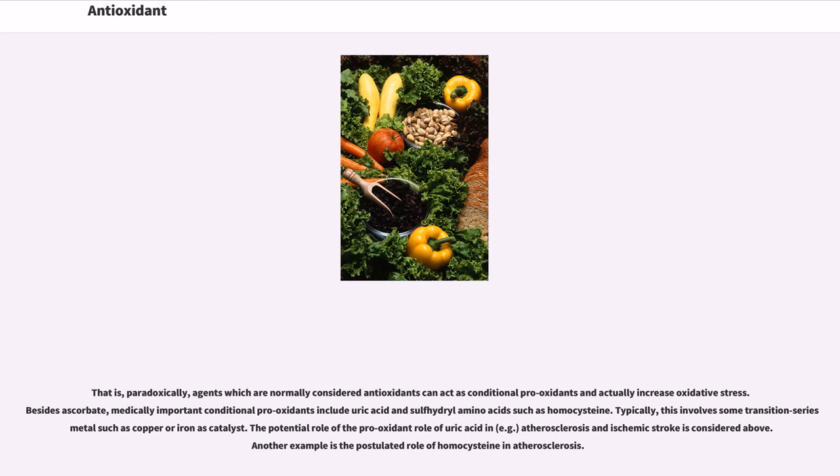That is, paradoxically, agents which are normally considered antioxidants can act as conditional pro-oxidants and actually increase oxidative stress. Besides ascorbate, medically important conditional pro-oxidants include uric acid and sulfhydryl amino acids such as homocysteine. Typically, this involves some transition-series metal such as copper or iron as catalyst. The potential role of the pro-oxidant role of uric acid in, for example, atherosclerosis and ischemic stroke is considered. Another example is the postulated role of homocysteine in atherosclerosis.